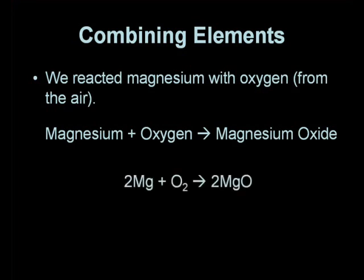Mg is the symbol for magnesium. O is the symbol for oxygen. And MgO is the formula of magnesium oxide. The large numbers, the 2's that are in front of the Mg and the MgO, are to do with balancing the equation. This is something you might learn about at a later stage.